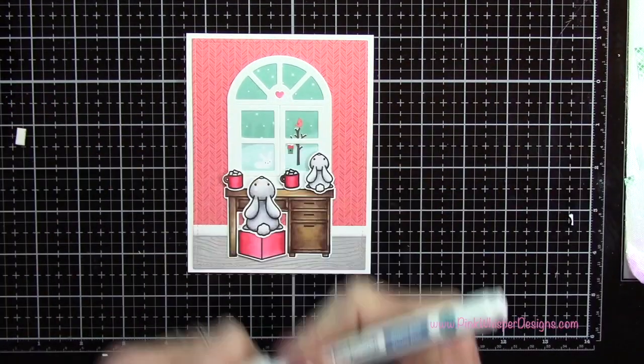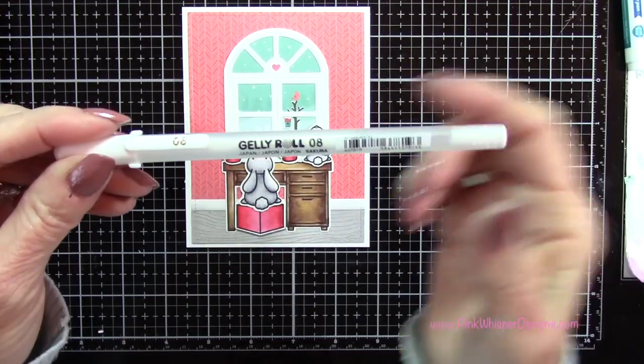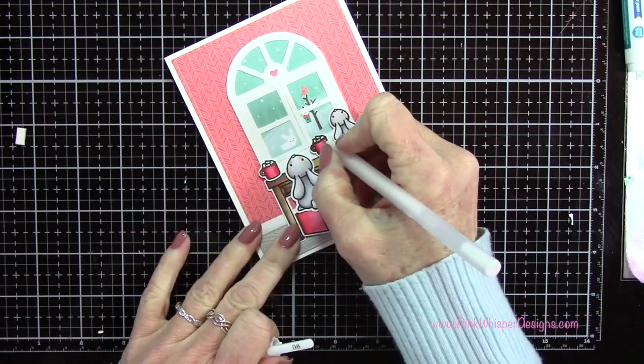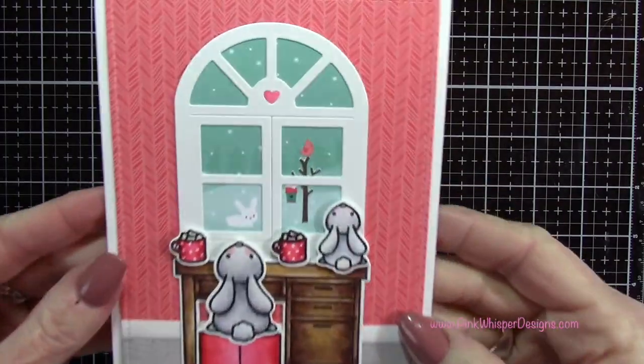For the little mugs I'm going to add a little bit of glitter to the marshmallows. This is the glitter pen from Lawn Fawn. Then with my white jelly roll gel pen I'm going to add some little polka dots to each of those mugs.